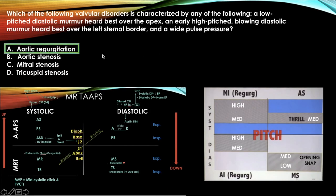The answer is aortic regurgitation. This question is tricky: a low-pitched diastolic murmur heard at the apex suggests mitral stenosis, but it's also blowing and heard at the left sternal border with a wide pulse pressure. Two descriptors pointing to two different answers — both mitral stenosis and aortic regurgitation appear as choices. Because of the wide pulse pressure and the blowing quality, aortic regurgitation is the answer. This is a good example of how the charts aren't 100% — you need some additional background knowledge.